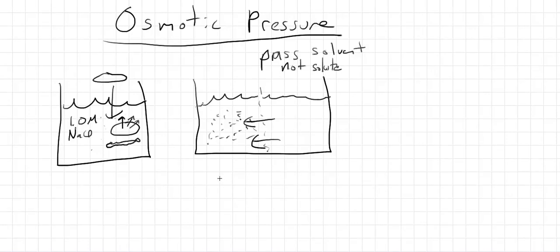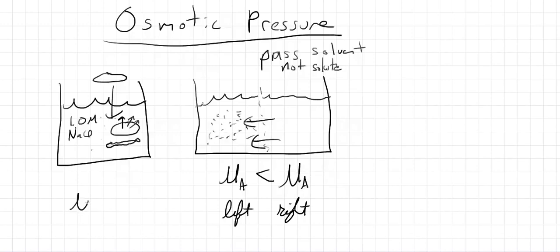If we look at the initial chemical potential of A on the left versus the right, we can see that the chemical potential is lower over here, right? Remember that the chemical potential of an ideal solution of component A, the solvent in the ideal solution is given by this expression. So as soon as this drops below one, as soon as we're impure, we've lowered our chemical potential. So the solvent's going to go over to the side where it's got a lower chemical potential.